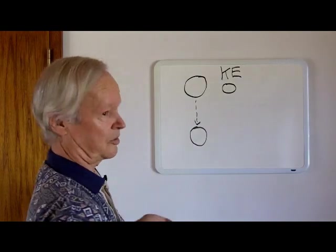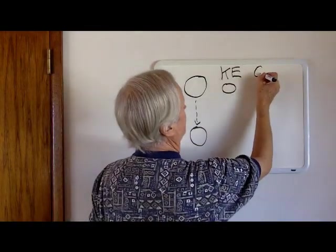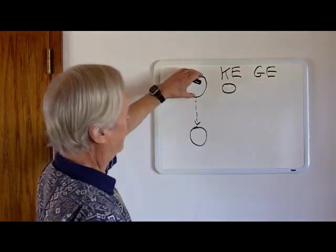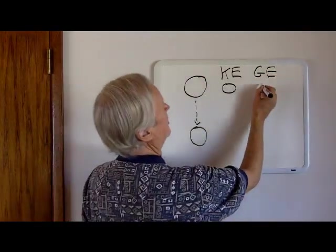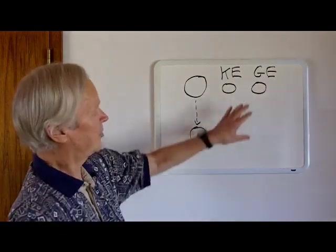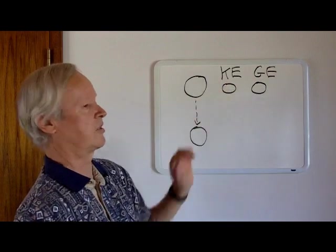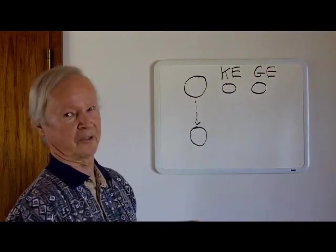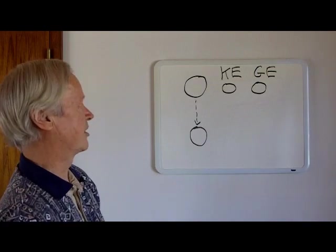It also has gravitational energy, which we'll call GE. Before we release the object, we can say the gravitational energy is zero. This is just a reference point. We could have said it's minus five or minus seven. It really doesn't matter. The result comes out exactly the same.